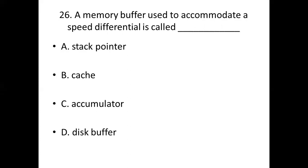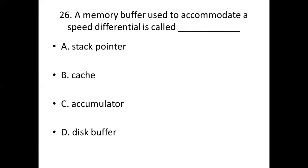Twenty-sixth bit. A memory buffer used to accommodate a speed differential is called dash. Option A: Stack pointer. Option B: Cache. Option C: Accumulator. Option D: Disk buffer. Answer: Option B, Cache.